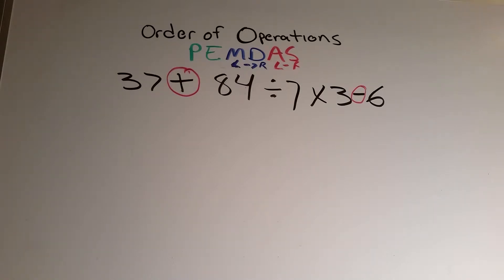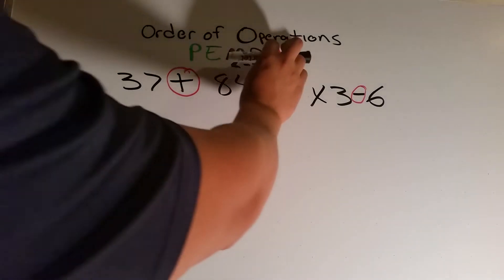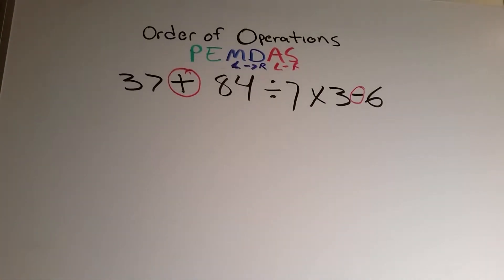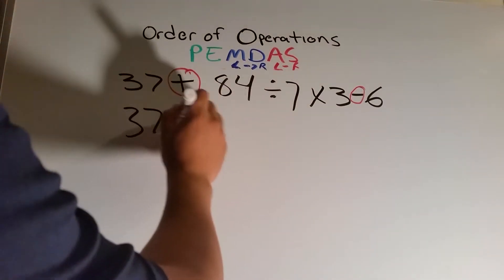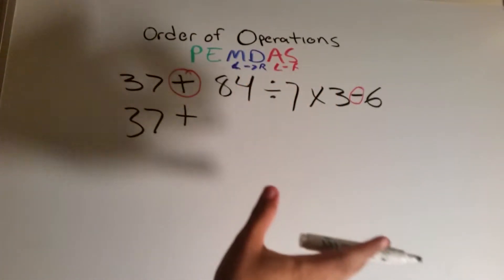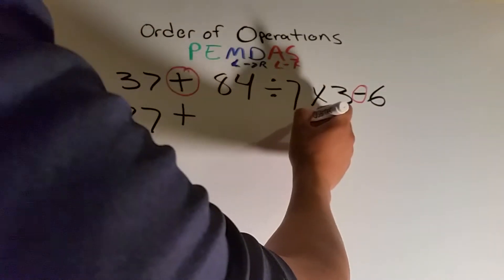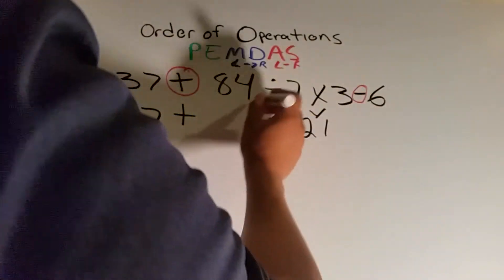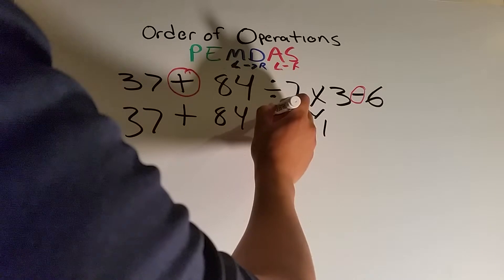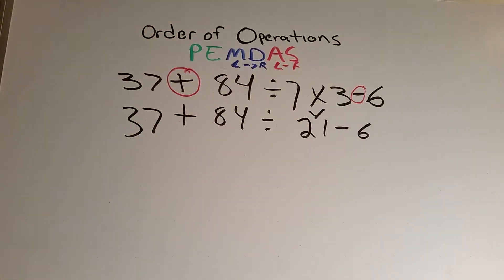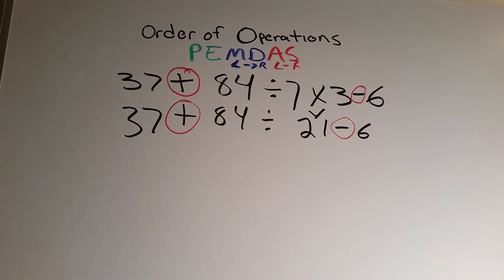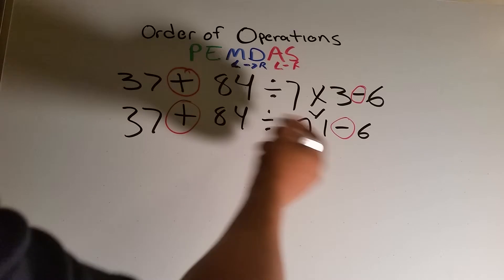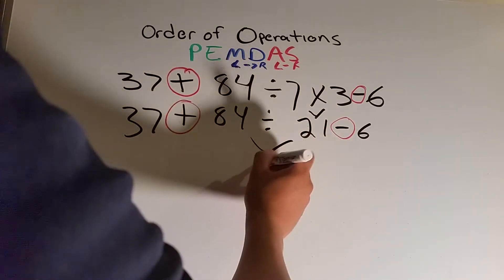On this one, I'm going to show you the multiplication and division portion. Let's say we didn't know that rule, and we just follow PEMDAS literally — multiply first. So we bring down the 37 plus, and we do 7 times 3, which gives us 21. Then we bring down 84 divided by 21 minus 6. We keep circling until all we have left is addition and subtraction. 84 divided by 21 gives us 4.